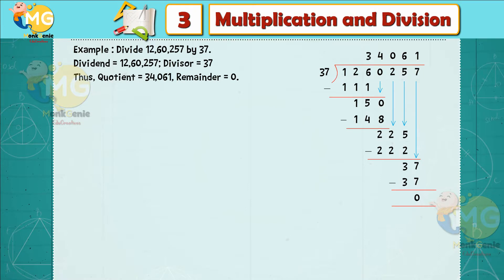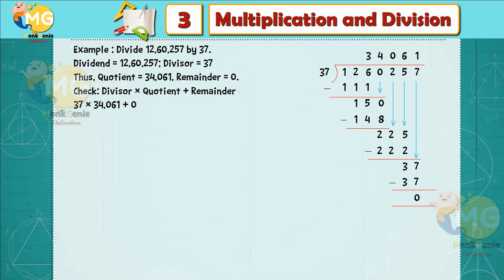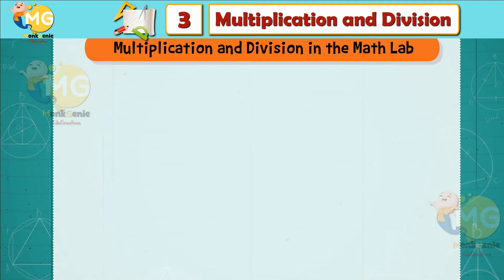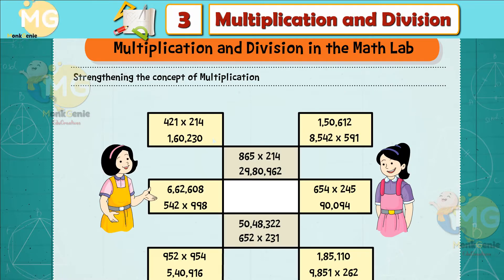Example: Divide 12,60,257 by 37. Dividend = 12,60,257, divisor = 37. Quotient = 34,061, remainder = 0. Check: 37 × 34,061 + 0 = 12,60,257 = dividend.